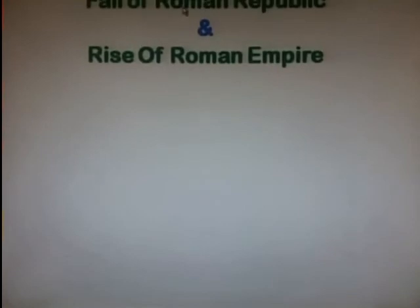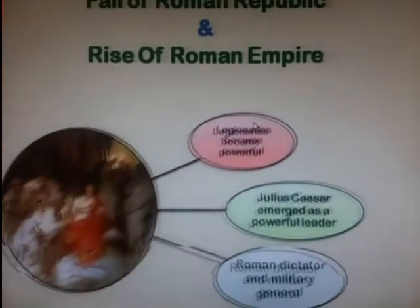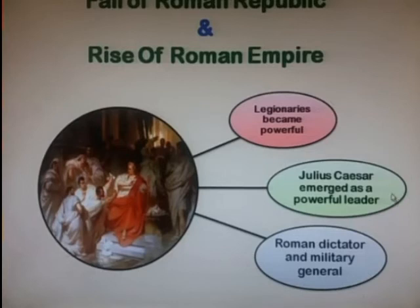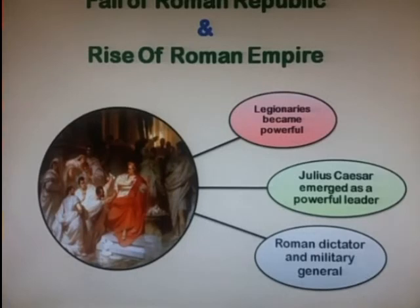The next topic is the Fall of the Roman Republic and Rise of the Roman Empire. During the first century, the government became weaker and the legionaries became so powerful that they became a threat to the government. Law and order was disturbed, and the people of Rome realized they needed a strong leader. At that time, Julius Caesar emerged as a powerful leader — a Roman dictator and military general who played an important role leading to the fall of the Roman Republic and rise of the Roman Empire. The people of Rome admired him because he made laws for them.